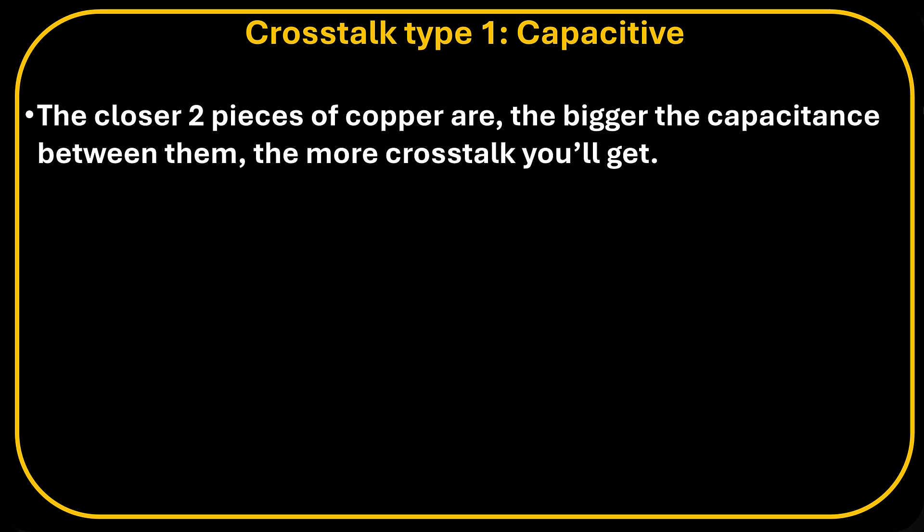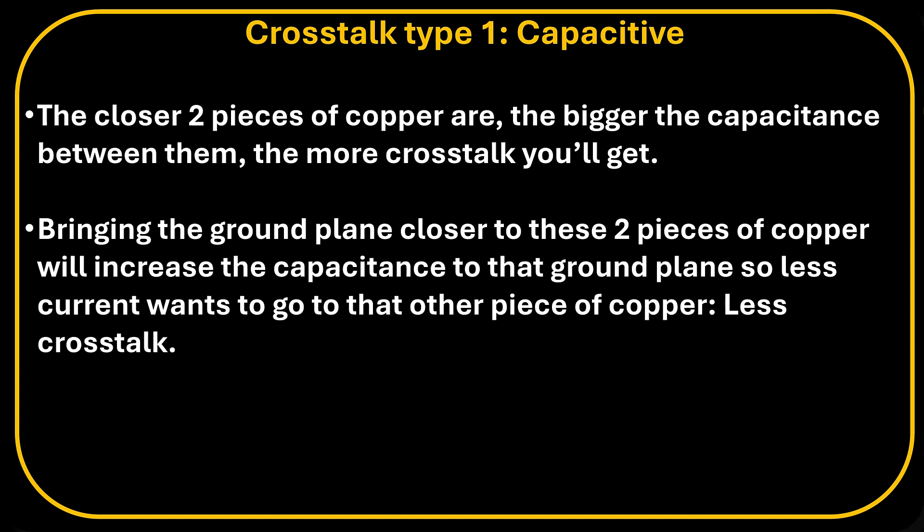First type of crosstalk, capacitive crosstalk. The closer two pieces of copper are, the bigger the capacitance between them, the more crosstalk you'll get. Bringing the ground plane closer to these two pieces of copper will increase the capacitance to the ground plane, so less current wants to go to the other piece of copper, which means you get less crosstalk.